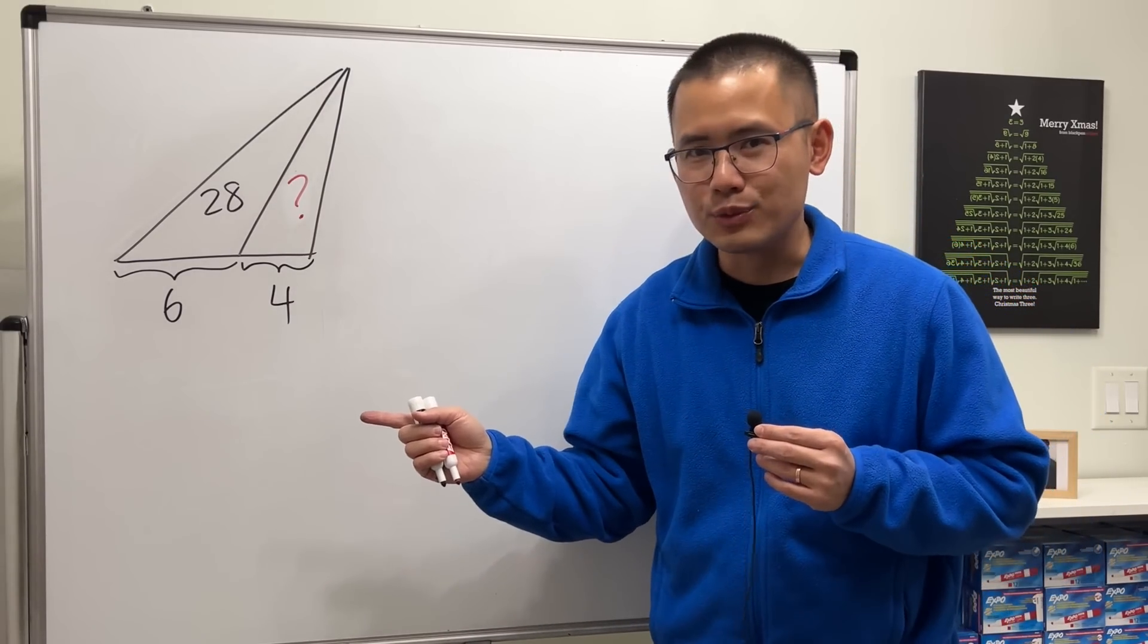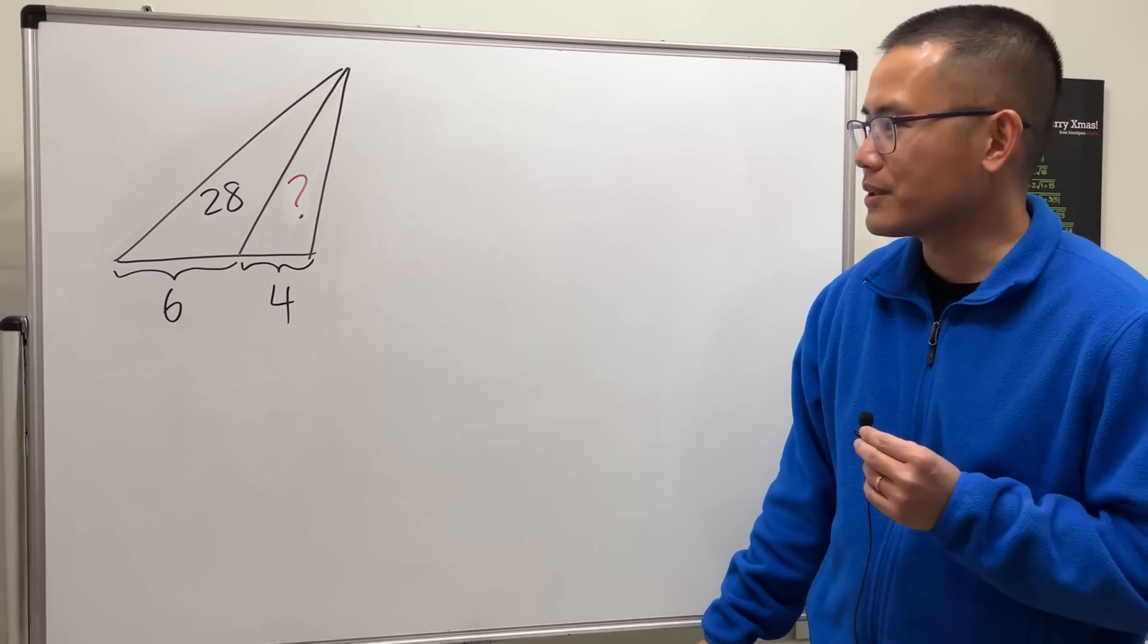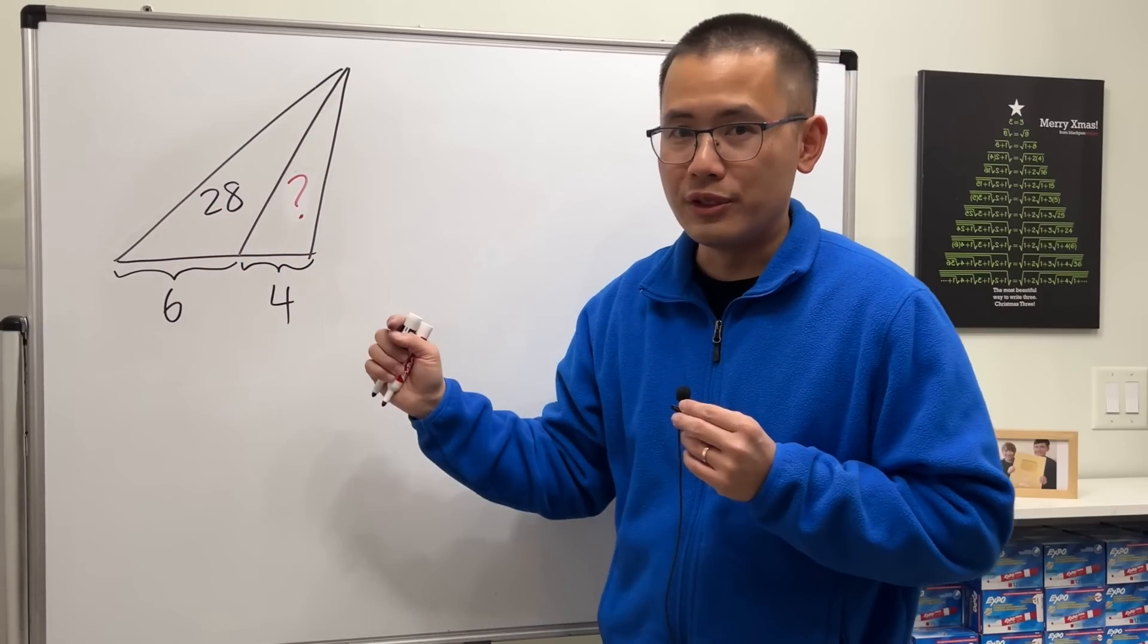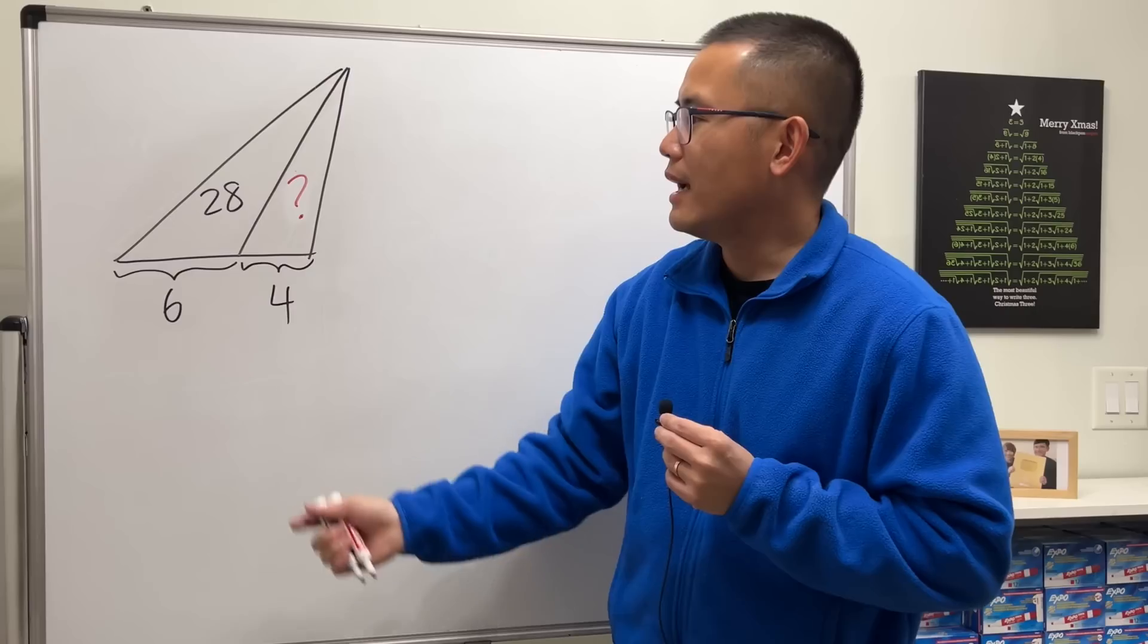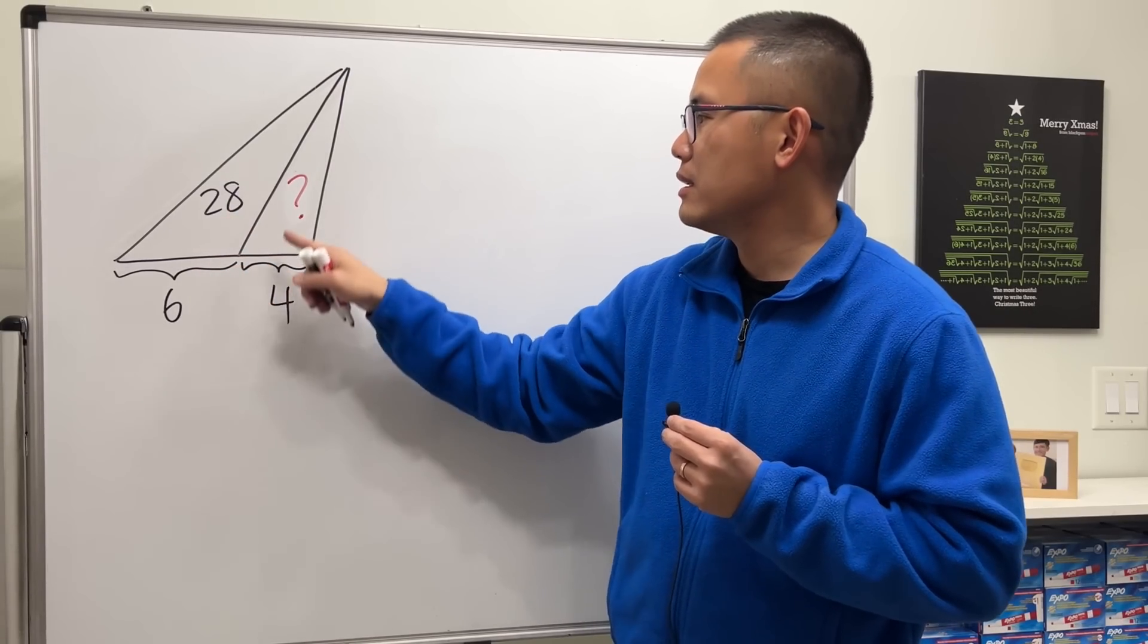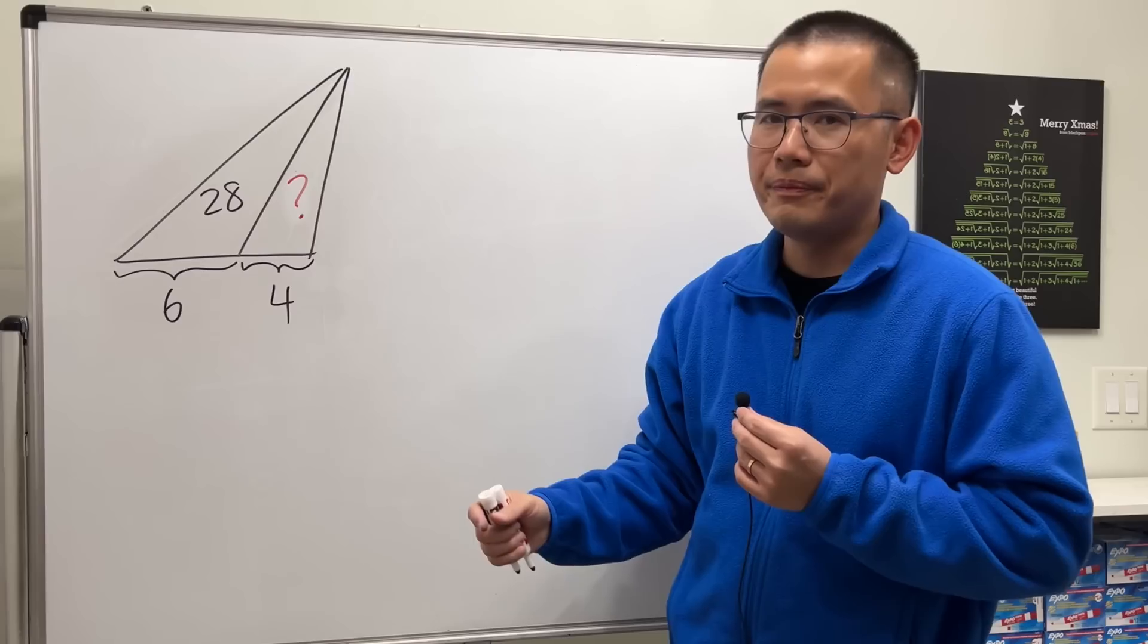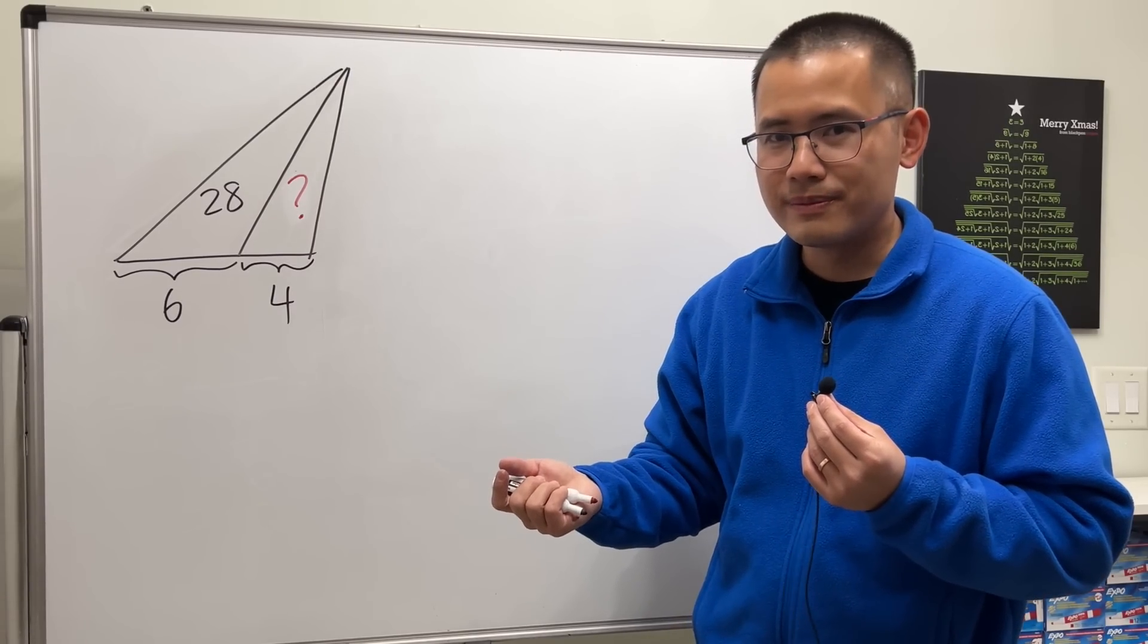I will show you guys the fast way first and I'll show you the proof after that. Whenever we have this situation - a triangle you cut into two parts - as long as you know the area and the side, and then one missing area and the side, you can set a proportion.